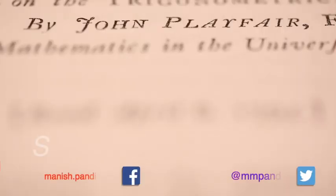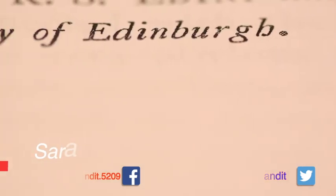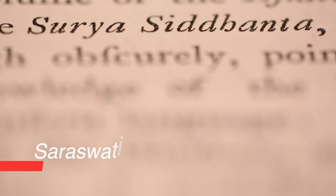John Playfair, astronomer and mathematician in Edinburgh, set up the Royal Society of Edinburgh. In the late 1700s, he came across the Surya Siddhanta, which contained tables of astronomy and trigonometry. One of the tables was a table of sines, and another was a table of versed sines.